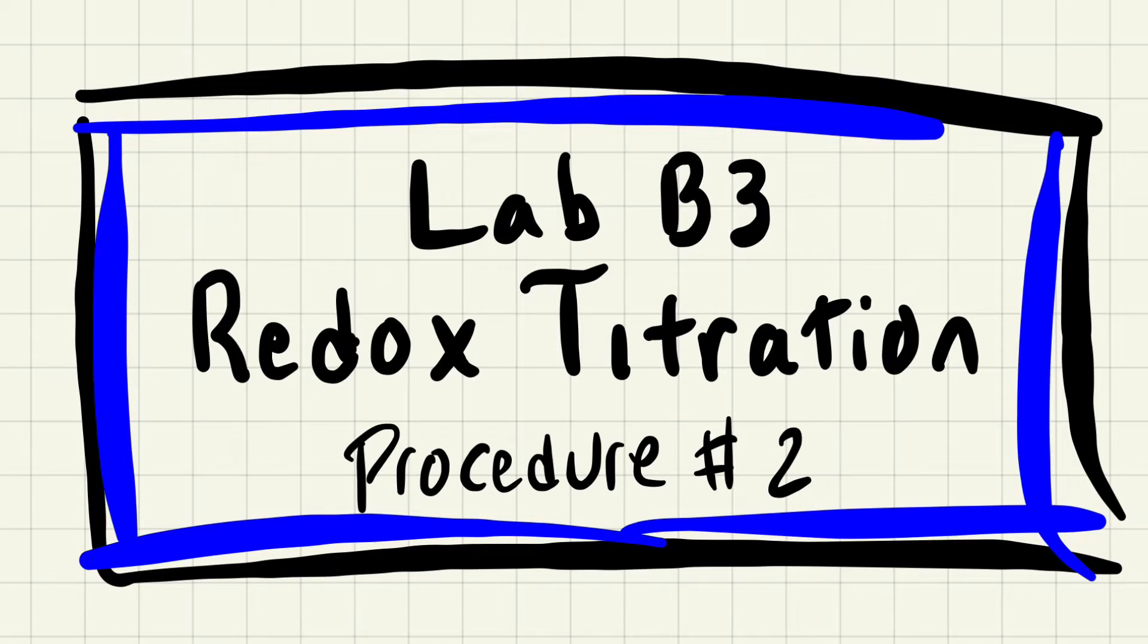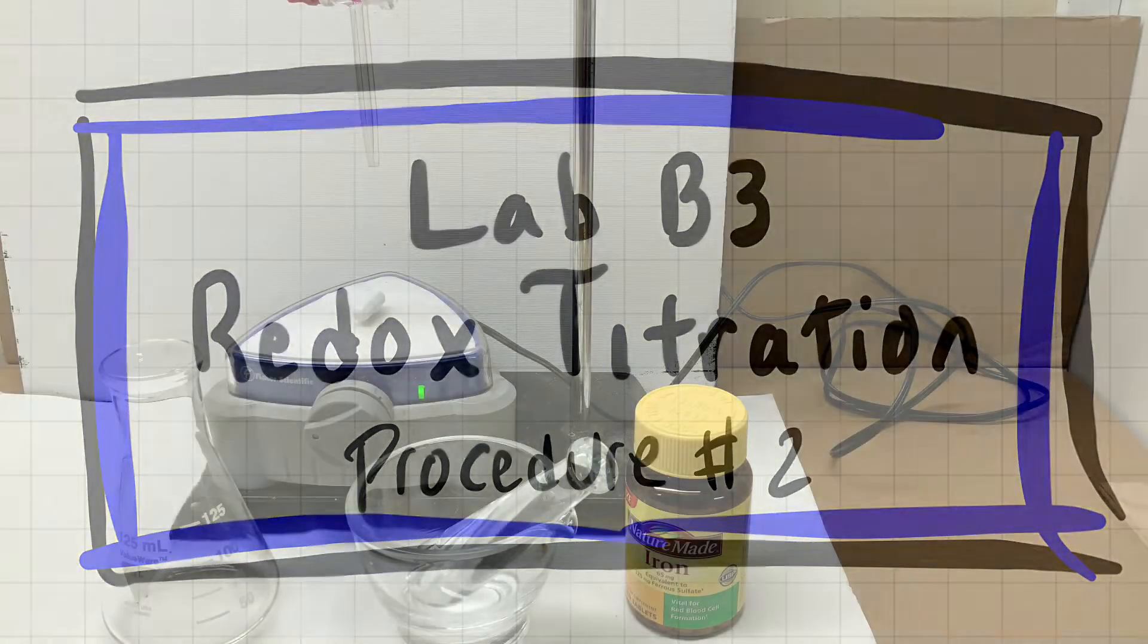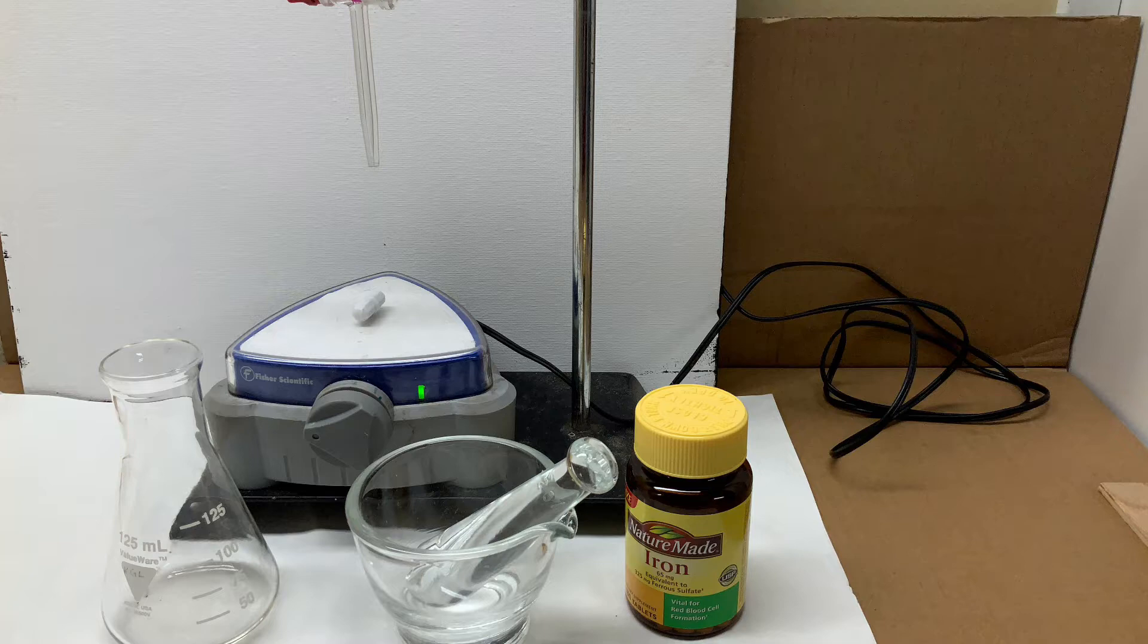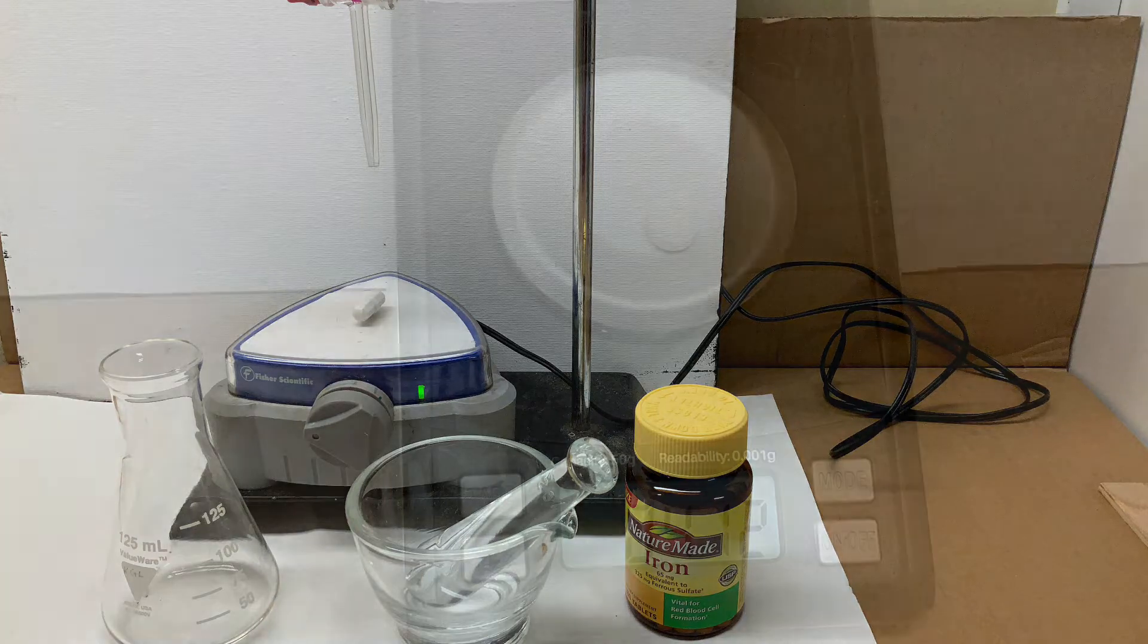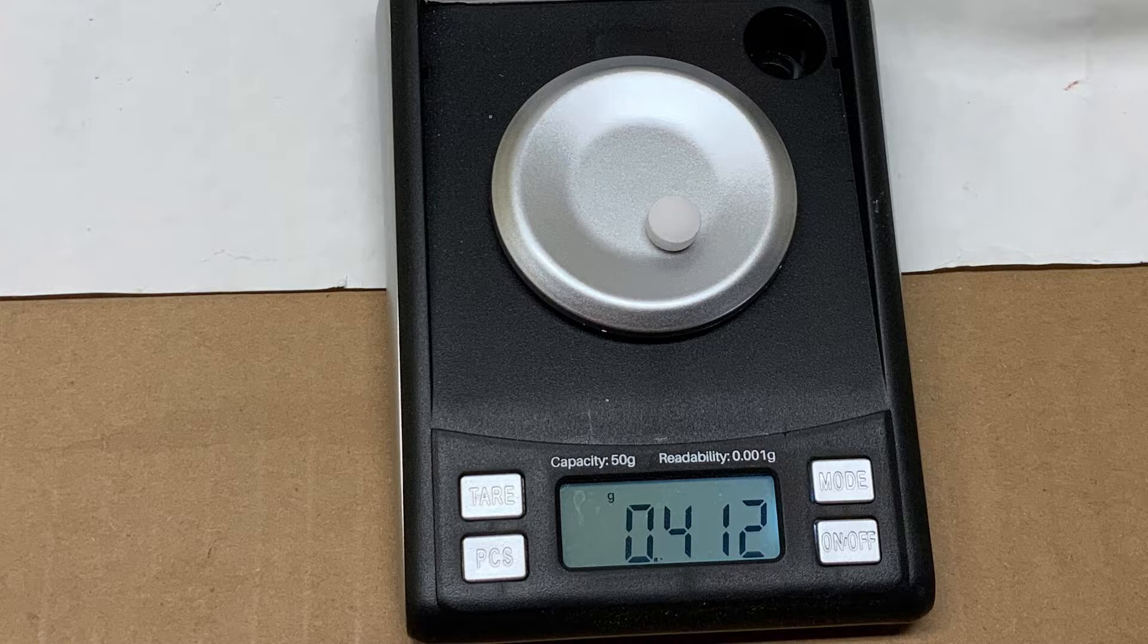Lab B3 Redux Titration Procedure 2. Here's the equipment that we need to get started and record the mass of the iron tablet into your data table.